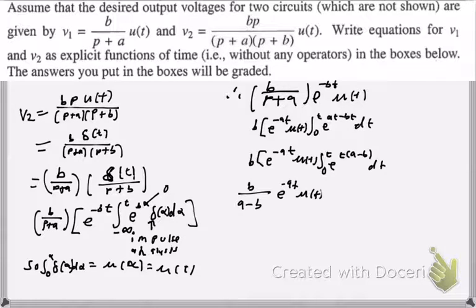Times E to the negative AT times the unit step function times our value of the integral. So, after you take this integral, you end up getting E to the A minus BT minus 1. You got that by applying your bounds.